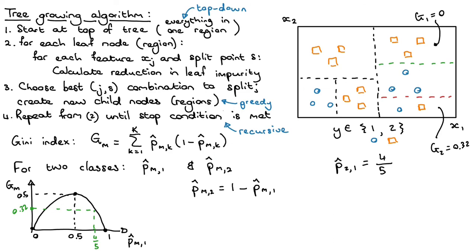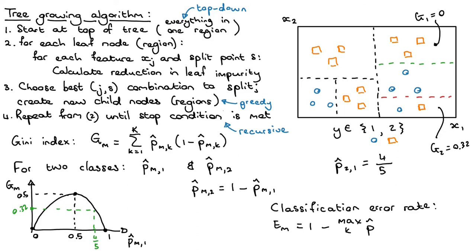There are many different options we can use as a metric of leaf impurity. The Gini index is one. Another option is the classification error rate, which for region M would simply be 1 minus the proportion from the class occurring most often in that region. However, the classification error rate is not sensitive enough when considering splitting a specific leaf node, which is why the Gini index or other similar metrics are used in practice.